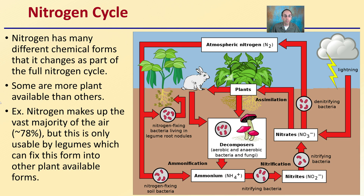The nitrogen cycle: nitrogen has many different chemical forms and changes as part of the full nitrogen cycle. Some are more plant-available than others — not all nitrogen can be taken up by plants. Nitrogen makes up the vast majority of the air, about 78%, but this atmospheric form is only usable by legumes, which can fix it into other plant-available forms. Most plants other than legumes cannot utilize atmospheric nitrogen despite being constantly exposed to it.